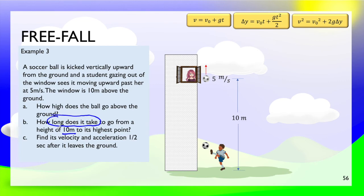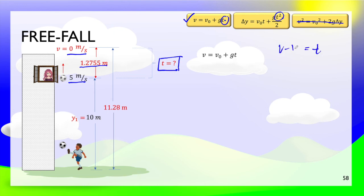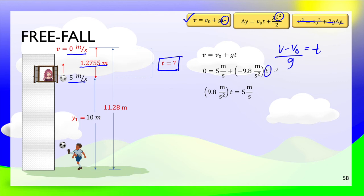For number 2, it asks how long it takes to go from a height of 10 meters to the highest point. We already know the displacement Y2, the initial velocity at 10 meters, and the final velocity at the top is 0. We cannot use the equation without time, so we'll use the easiest one: t equals v minus v-naught divided by g. Substituting gives us the answer.